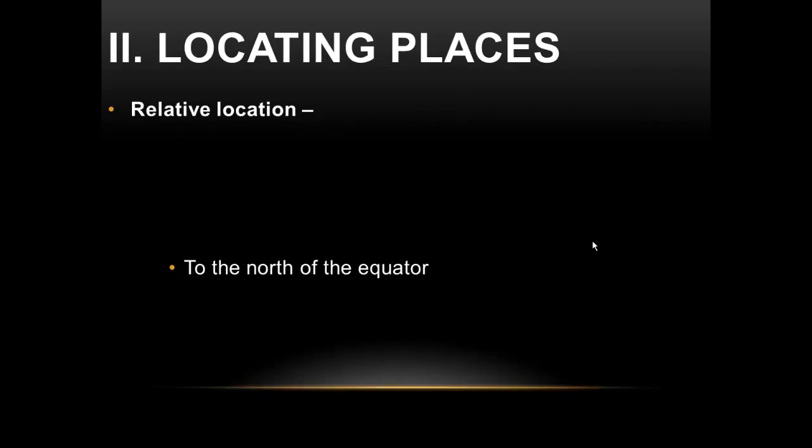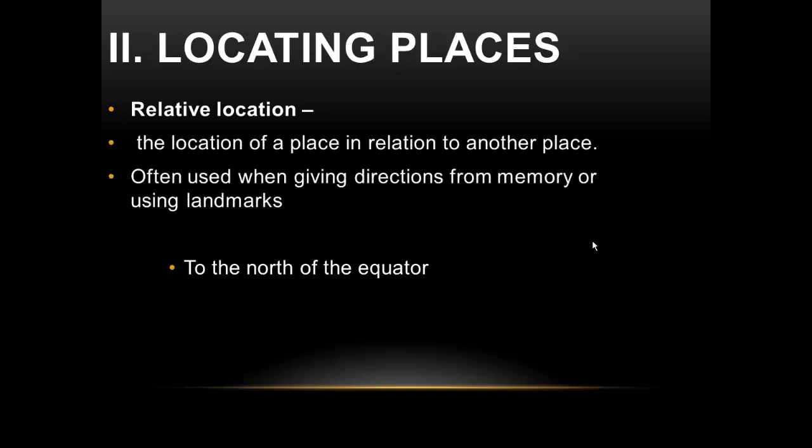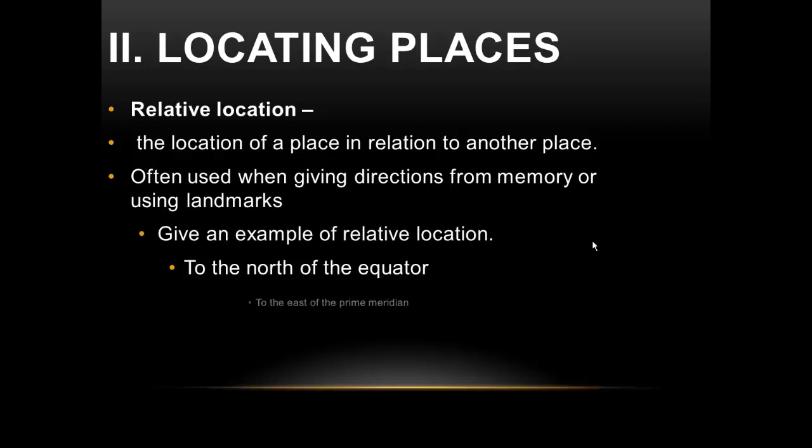Relative location is different from absolute location. When we say relative location, we mean giving directions using the location of one place to describe another. Relative location is often used when giving directions from memory or using landmarks. For example, instead of giving coordinates or an address, you might say 'I live north of Airline Highway' or 'I live down the street from Gonzales Middle' — using it as a landmark — or 'I live just south of Central.' On a map, you might say a country is east of the prime meridian.